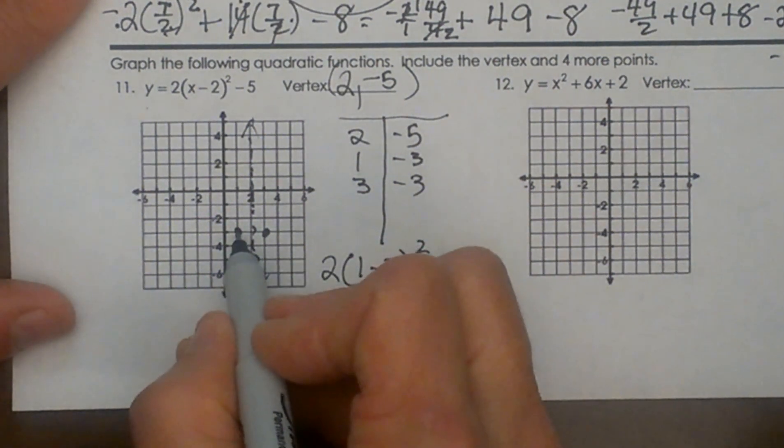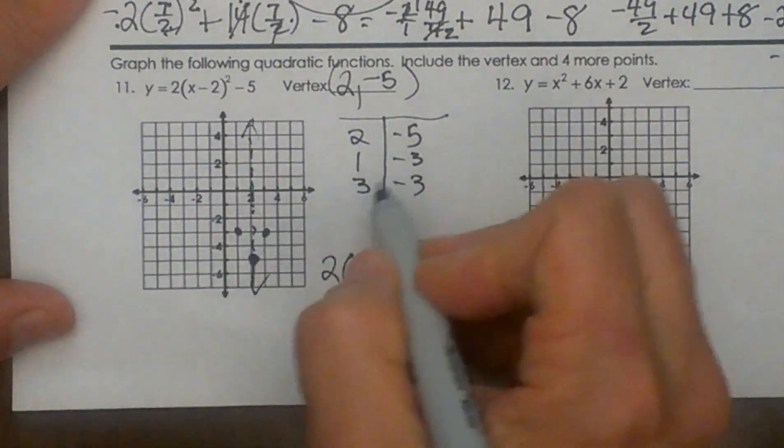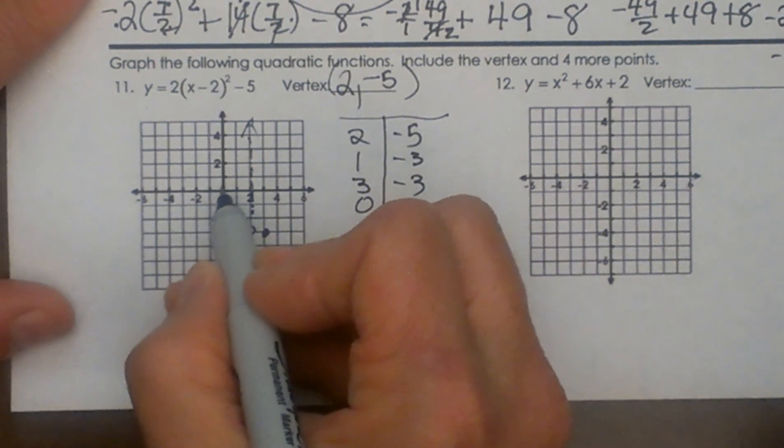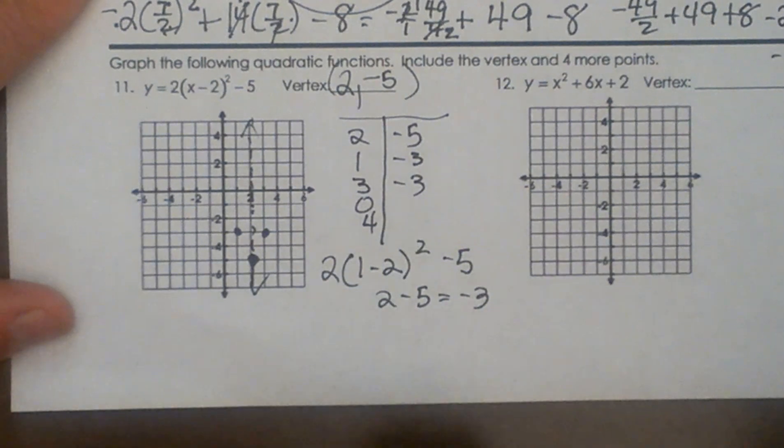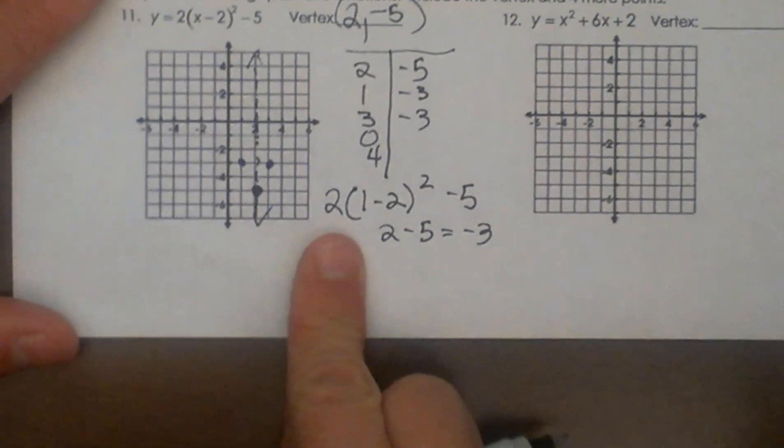And then I can do the same thing one more time to the left and to the right. And so that would be plugging in a 0 on the left. 0 would be my next x. And then the matching x coordinate would be 4. So which one looks a little easier to plug in? I think 0 is always easy to plug in. So let's plug it in.